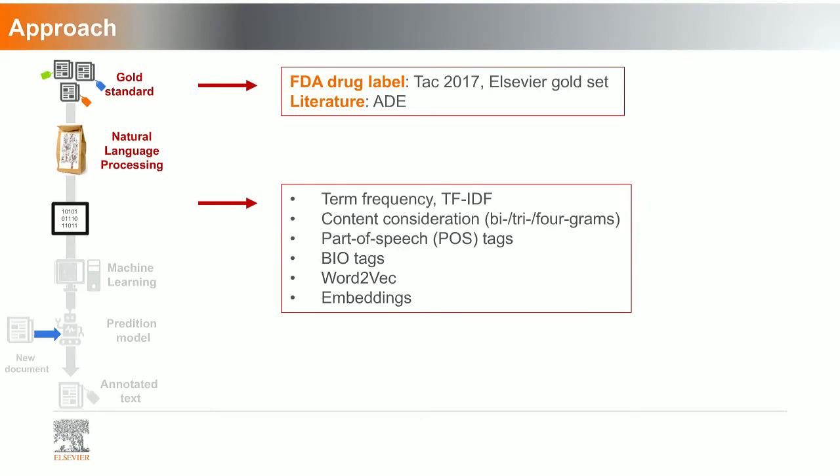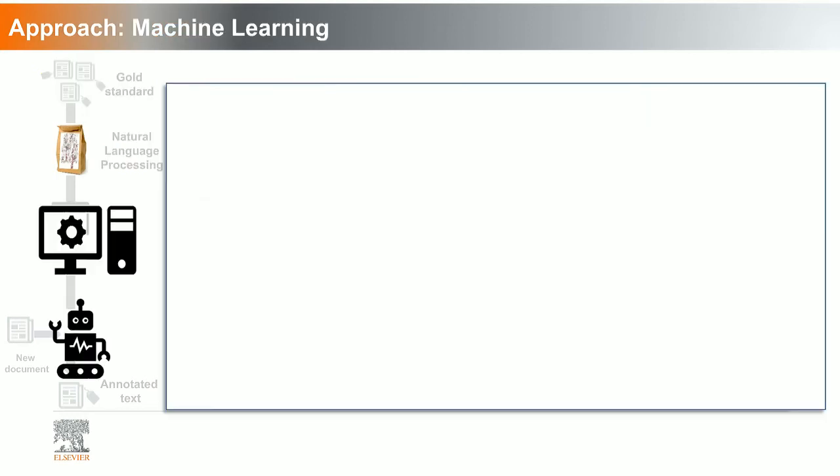To recap again: we are using FDA drug labels and literature for gold sets. We can use different types of features: term frequency, content, bigram, trigram (multiple word combinations), part of speech, BIO tagging, and word-to-word embeddings.